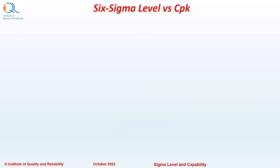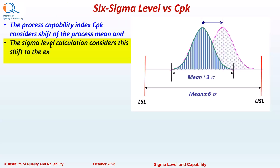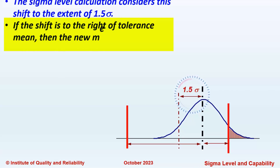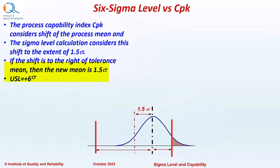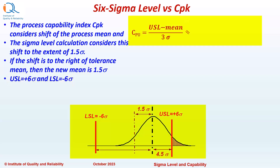Let us now understand the mathematical relationship between Sigma Level and CPK. We will first illustrate this for a 6 Sigma Level process. We know that CPK considers the shift of the process mean, and the Sigma Level calculation considers this shift to the extent of 1.5 Sigma. If the shift is to the right of the Tolerance mean, then the new mean will be equal to 1.5 Sigma. USL equals plus 6 Sigma and LSL equals minus 6 Sigma. Therefore, CPU equals USL minus mean upon 3 Sigma, which is 6 Sigma minus 1.5 Sigma upon 3 Sigma, or 4.5 Sigma upon 3, which equals 1.5.